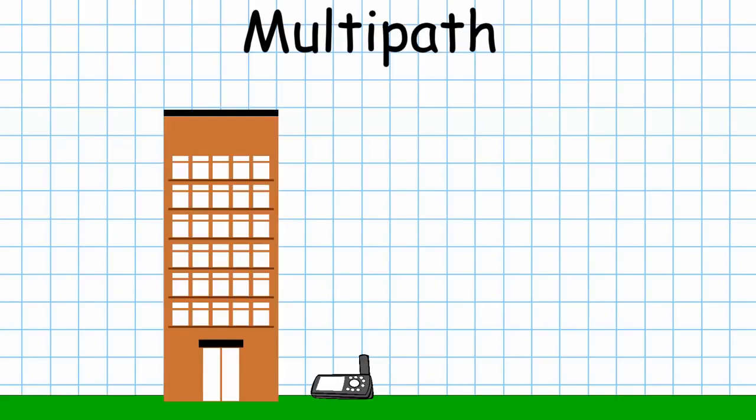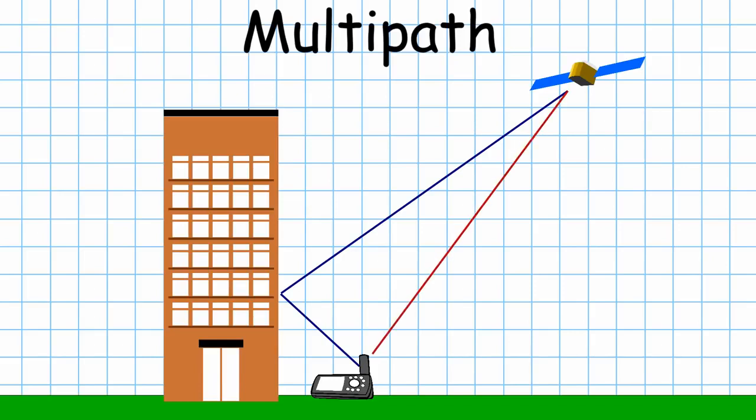Multipath errors are caused by signals from satellites not taking a direct path to the receiver. Maybe they bounce off a building or a cliff face before reaching the receiver. Again this results in the signal taking a longer time to reach the receiver than it would have taken if it had travelled along the direct route. Again, this results in an erroneous distance being calculated.